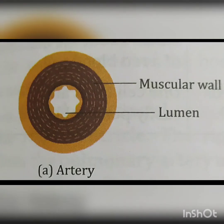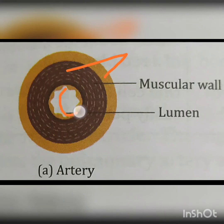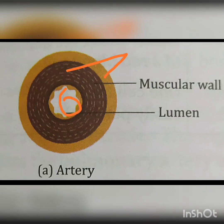The arteries are thick-walled, elastic and muscular vessels with a narrow lumen in which the blood flows with jerks. They carry pure, i.e. oxygenated blood away from the heart to various parts of the body. Only the pulmonary artery carries impure, i.e. deoxygenated blood to the lungs.